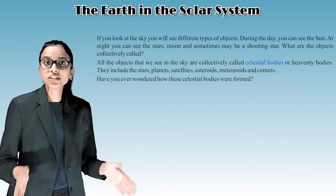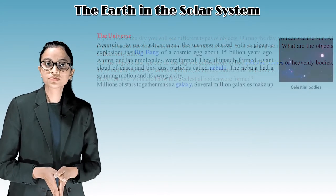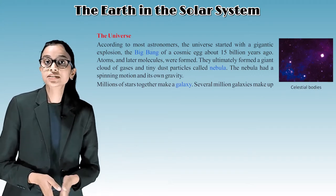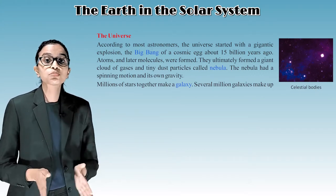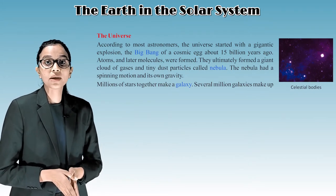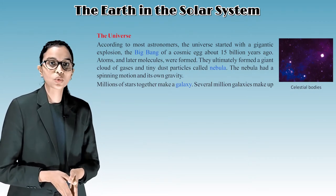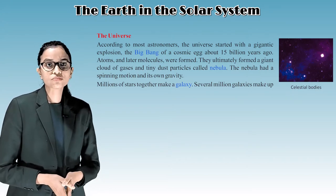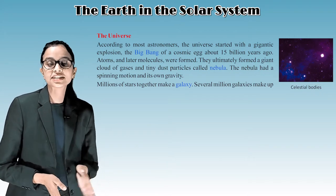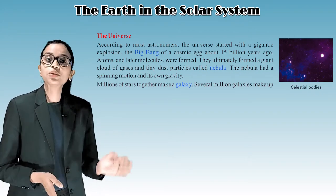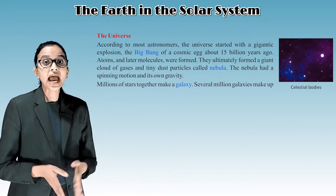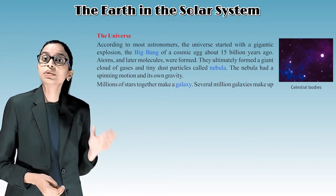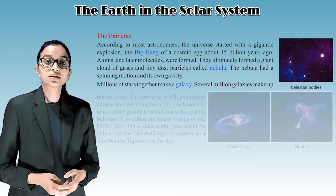Have you ever wondered how these celestial bodies were formed? The universe. According to most astronomers, the universe started with a gigantic explosion, the Big Bang of a cosmic egg about 15 billion years ago. Atoms and later molecules were formed. They ultimately formed a giant cloud of gases and tiny dust particles called nebula. The nebula had a spinning motion and its own gravity. Millions of stars together make a galaxy. Several millions of galaxies make up the universe.